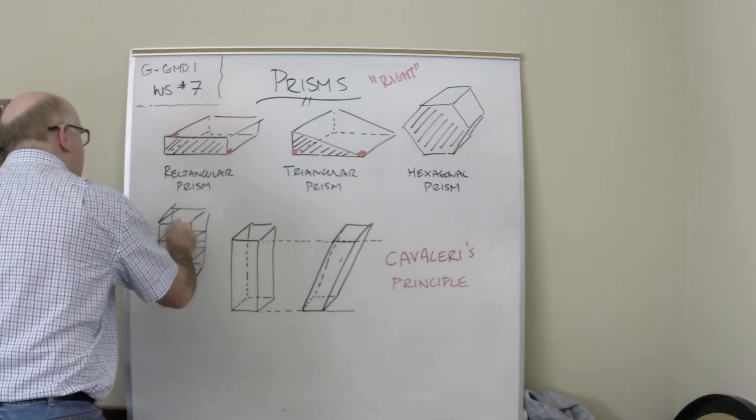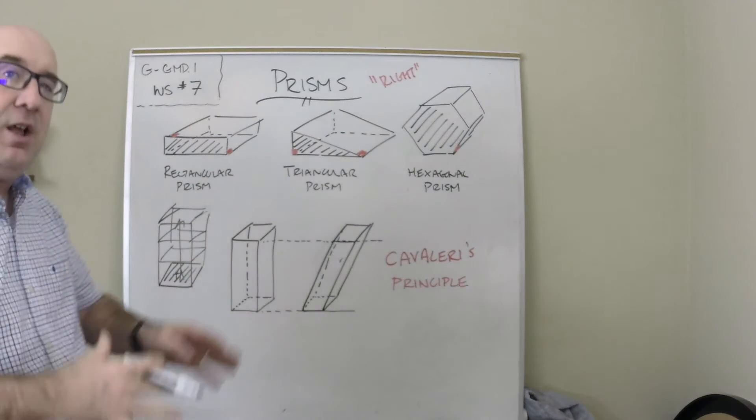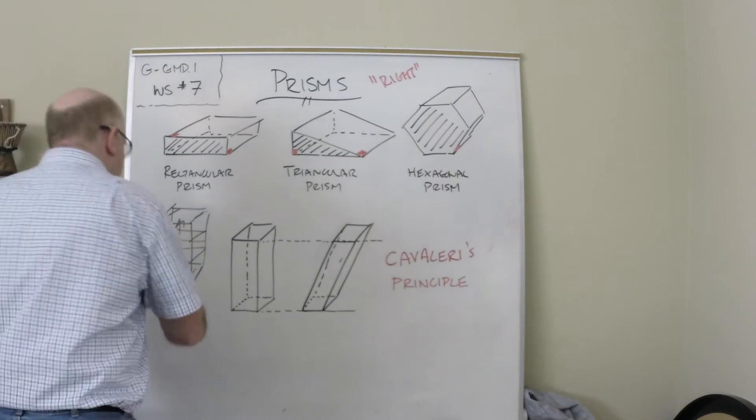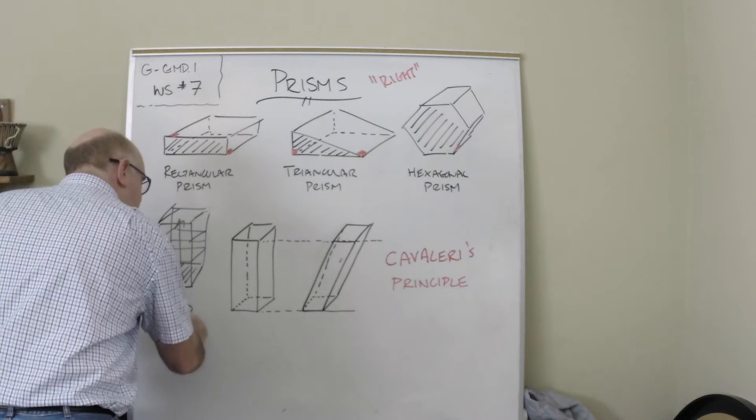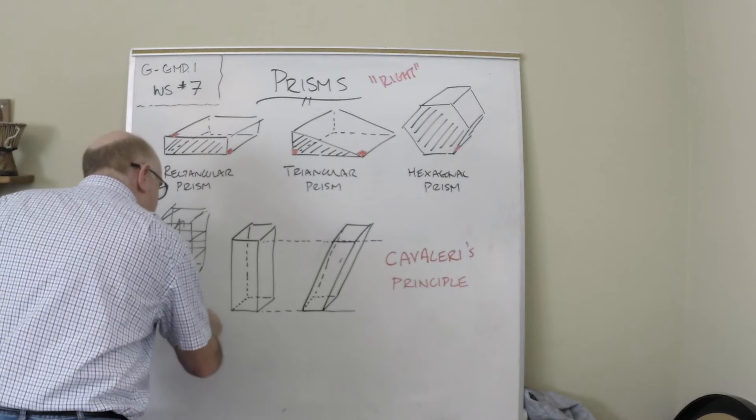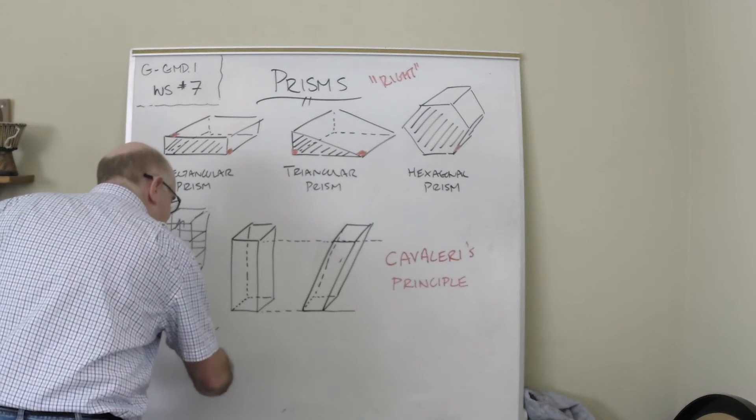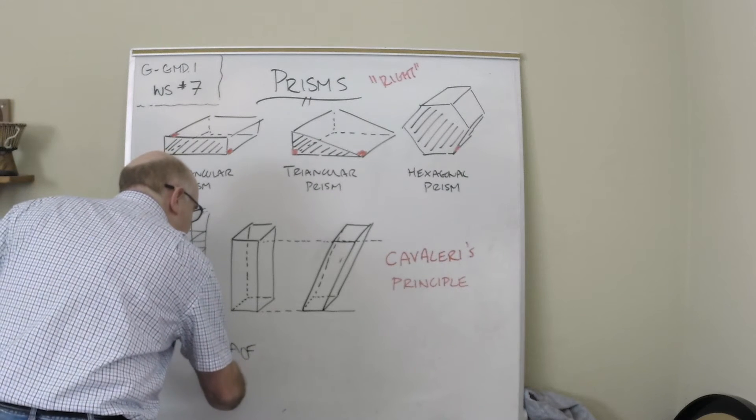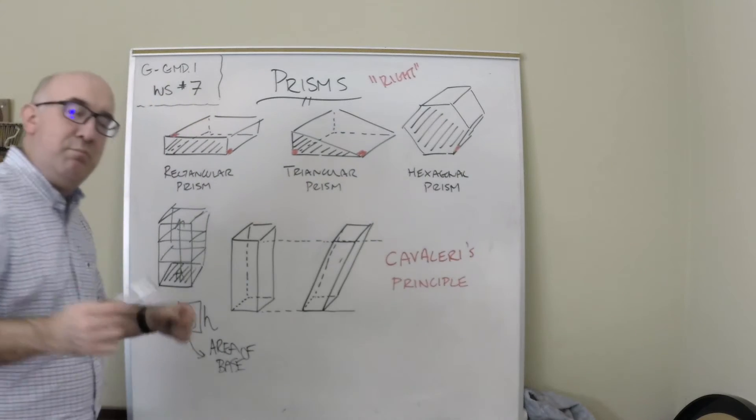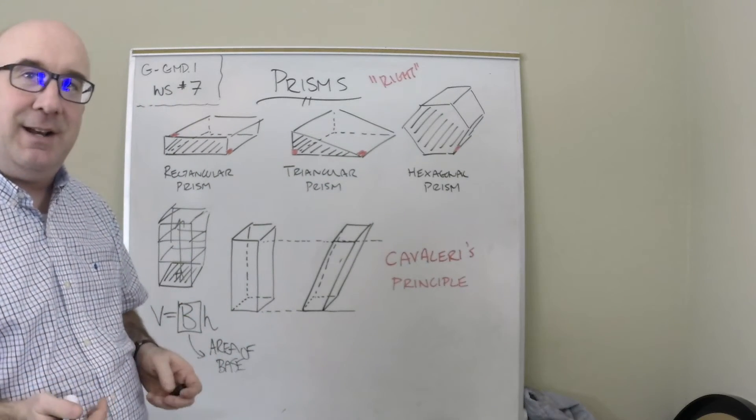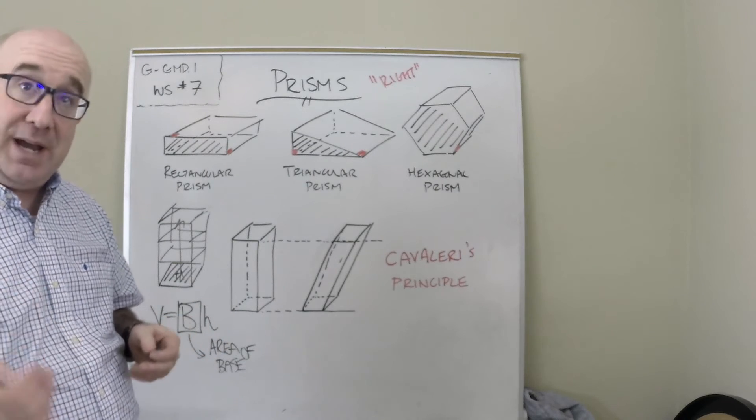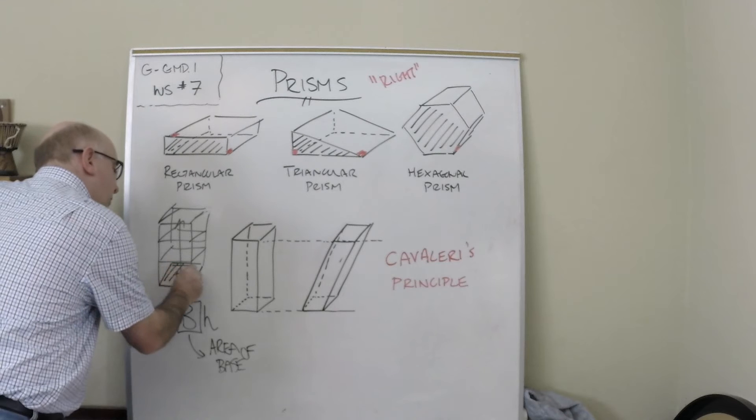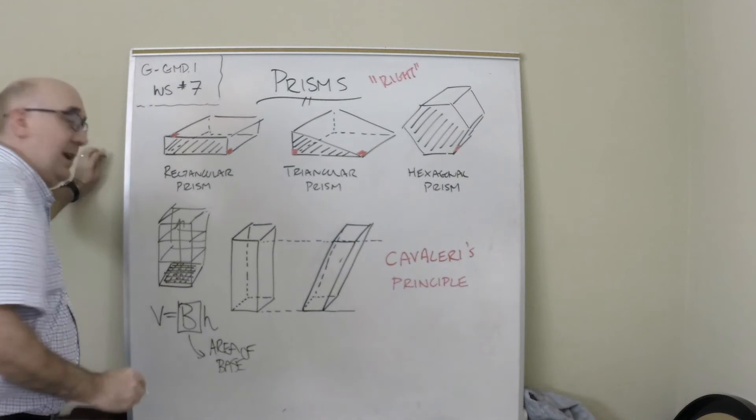And so we learn with prisms we get a formula: the volume is big B times H. And big B stands for the area of the base—not like little b as it did in area of a triangle where we had a B for base. This is a capital B and it refers to the entire region there.